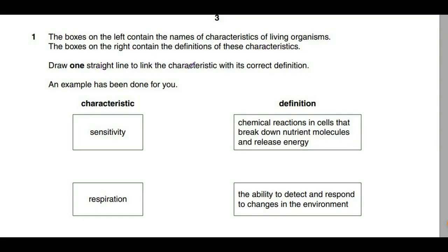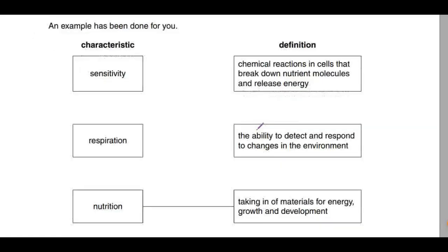Draw one straight line to link the characteristic with its correct definition. We have an example as well. They give us a characteristic here and they want us to give the definition. This should be straightforward if you already know the definitions to these characteristics. For example, sensitivity is just a response to a stimulus and respiration is production of energy.